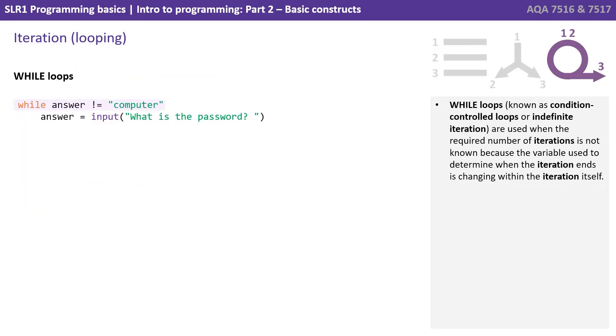While loops, known as condition-controlled loops or indefinite iteration, are used when the required number of iterations is not known, because the variable used to determine when the iteration ends is changing within the iteration itself. We've got an example on the screen there now.